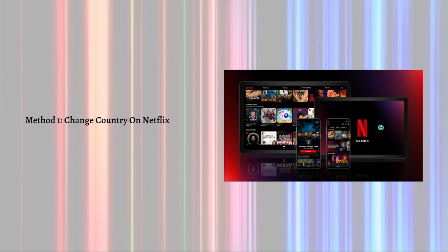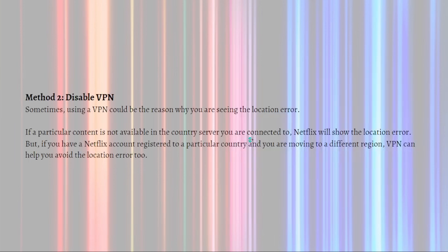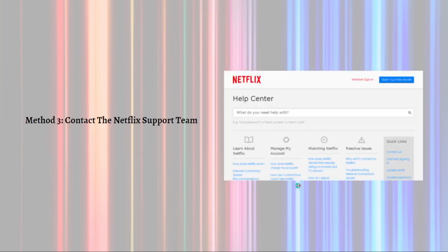Next, what you can also try is to disable the VPN. Sometimes using a VPN could be the reason why you are seeing the location error. If a particular content is not available in the country server you are connected to, Netflix will show the location error. But if you have a Netflix account registered to a particular country and you are moving to a different region, a VPN can help you avoid the location error too.